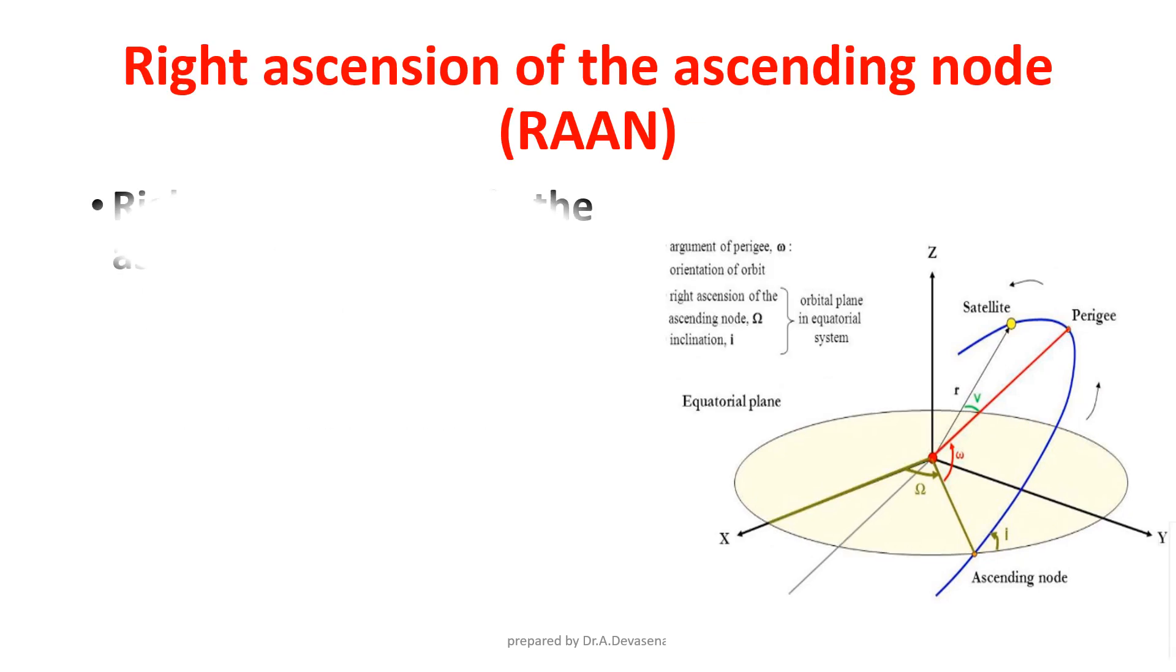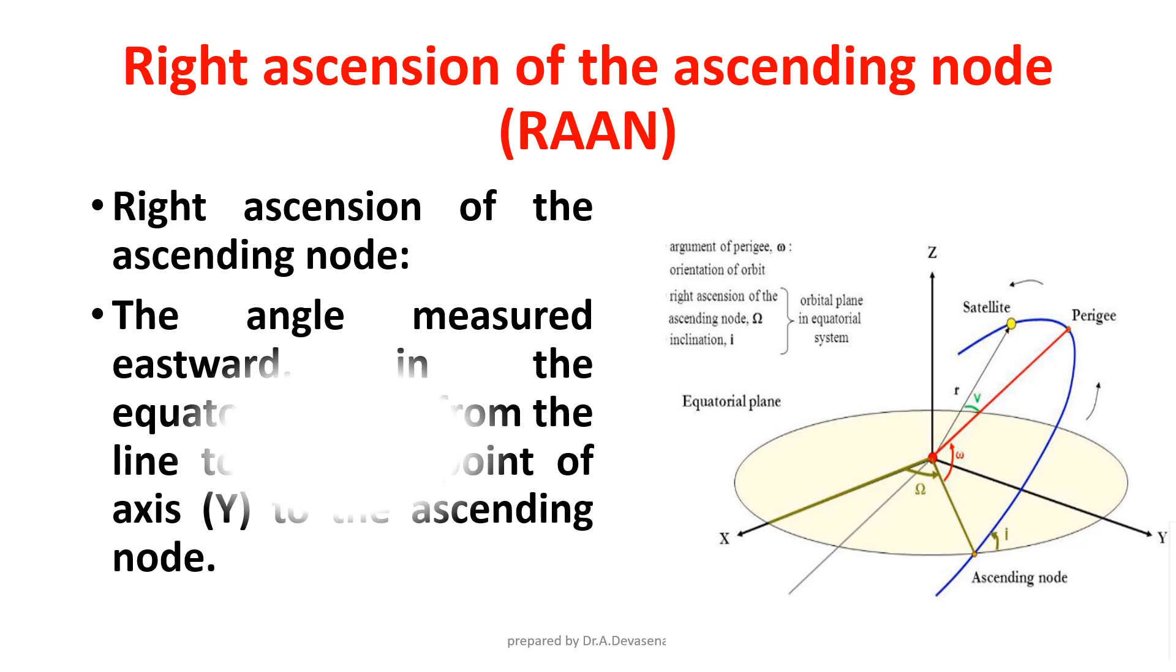Right ascension of the Ascending Node, RAN. Eccentricity is measured in the equatorial plane from the line to the first point of the axis Y to the ascending node. Here it is indicated.